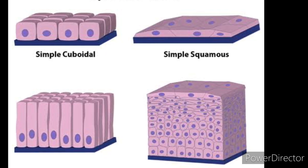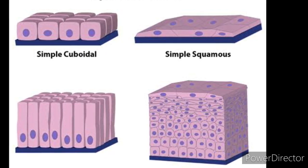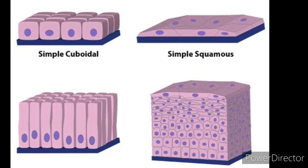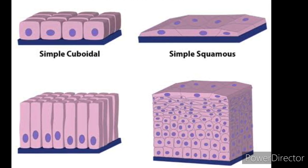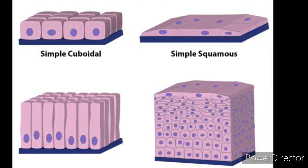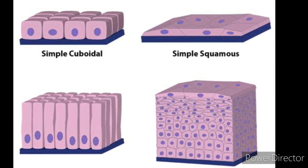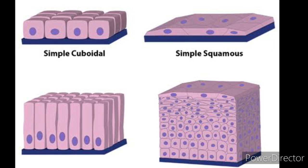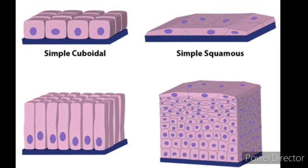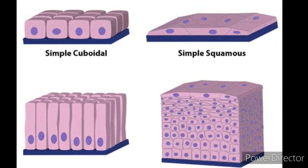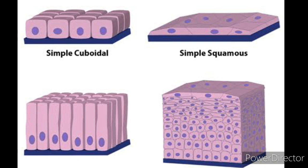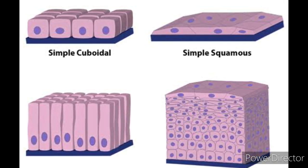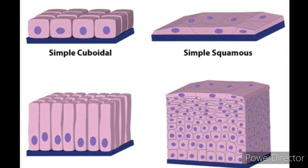The first type is squamous epithelium. It is very thin, flat, and delicate lining of the body organs. It is located as lining of the esophagus, mouth, blood vessels, and lung alveoli.